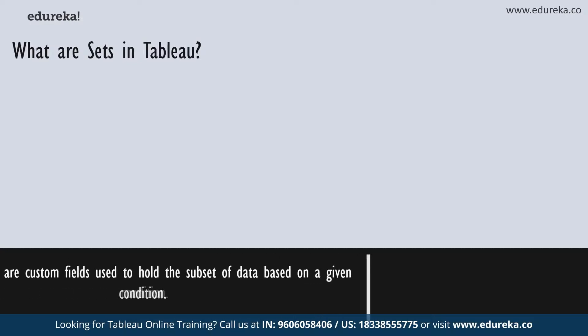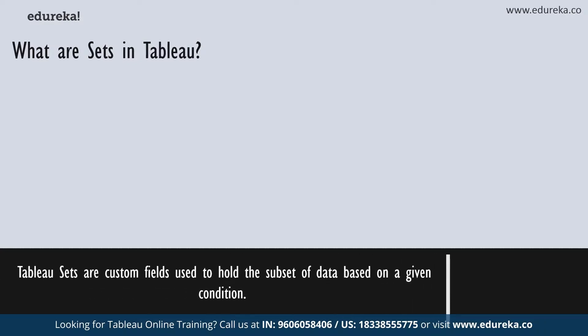Tableau sets are basically custom fields which are used to hold a subset of data based on a given condition. In real time, you can create a set by selecting members from the list or from a visualization. You can also do the same by writing custom conditions or selecting top or bottom few records in a measure. Basically, a Tableau set is a field which holds certain parts of your data to which you can apply a certain condition.